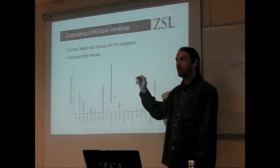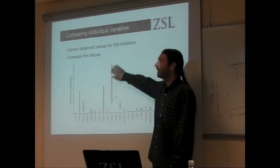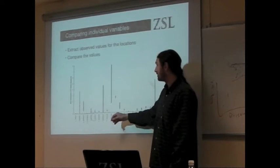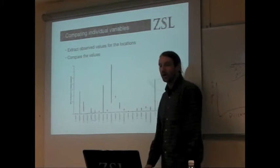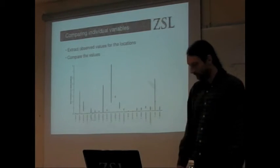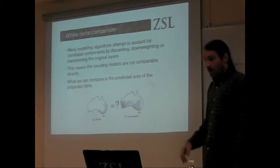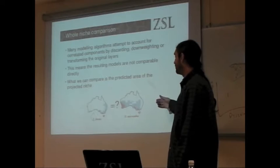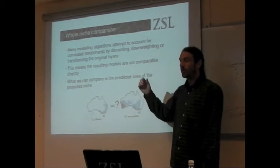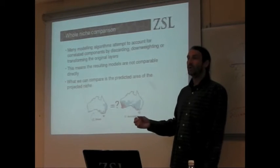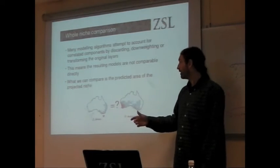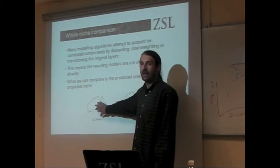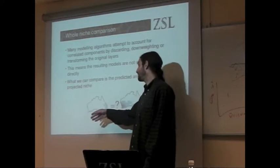It's essentially just taking our previous matrix, working out the minimum and the maximum confidence intervals like we did yesterday within the GIS and just using that to plot them on a graphic. Another way we can do the comparison is rather than look at one variable at a time, we can try to look at the whole niche in one go.